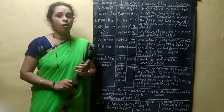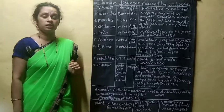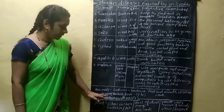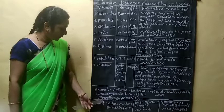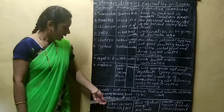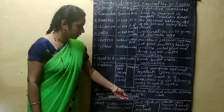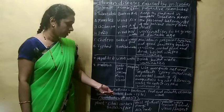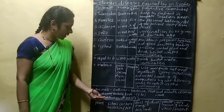Microorganisms also cause diseases in animals. Anthrax is a bacterial disease in animals, caused by the bacterium Bacillus anthracis. This was discovered by Robert Koch in the year 1876. You have to collect information about scientist Robert Koch and add it to your info sheet.